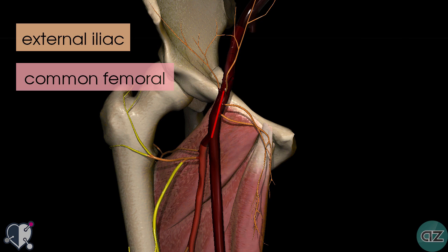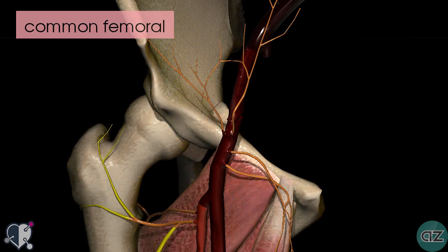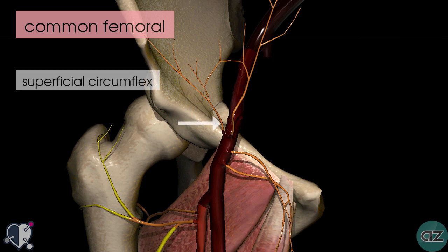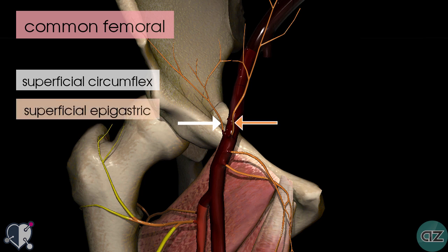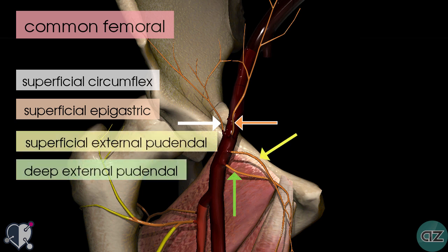The common femoral artery enters the femoral triangle and it gives off four branches. The first one is the superficial circumflex branch, this one is the superficial epigastric branch, and then we've got the superficial external pudendal and the deep external pudendal arteries. So those are the four branches which come off the common femoral artery.